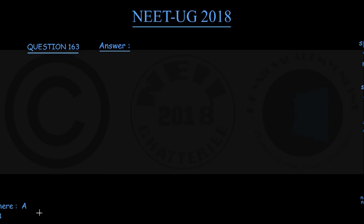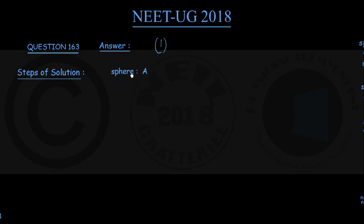For question number 163 the correct option is option 1, and let us see how we can arrive there. Note that they use different letters for the three different objects: the sphere uses the letter A, the disk uses the letter B, and for the ring they are using the letter C. Keep this in mind to avoid any silly error.